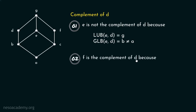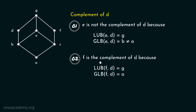F is the complement of D because the least upper bound of F and D is equal to G, and the greatest lower bound of F and D is equal to A. Therefore, it is clear that F is the complement of D — D has a complement. The complement of D is F, and D is also the complement of F.